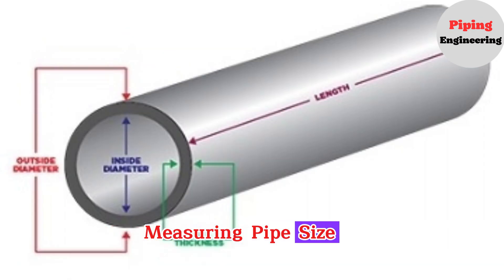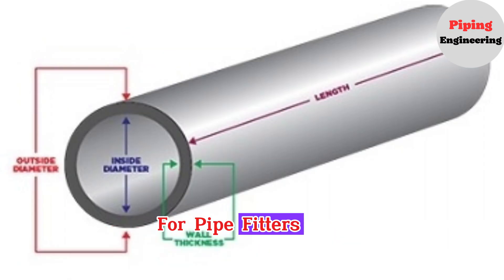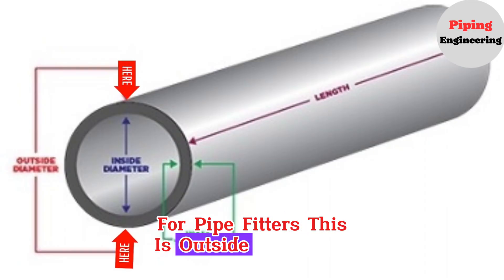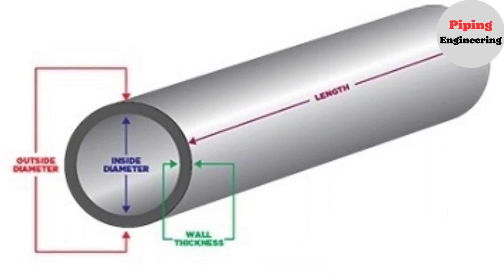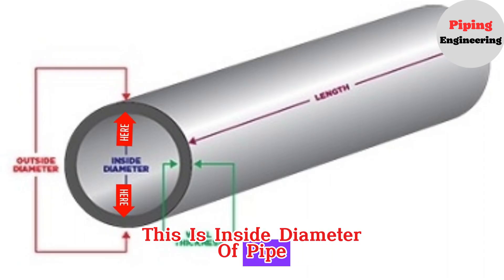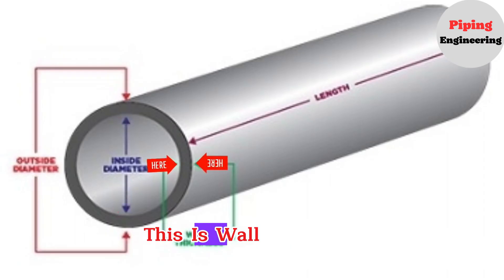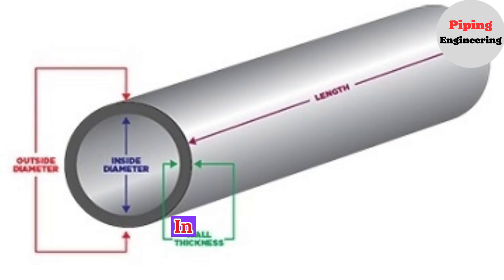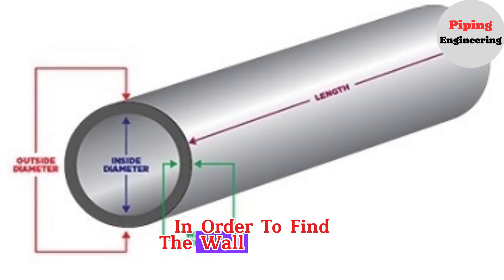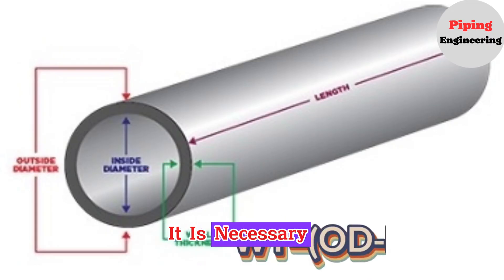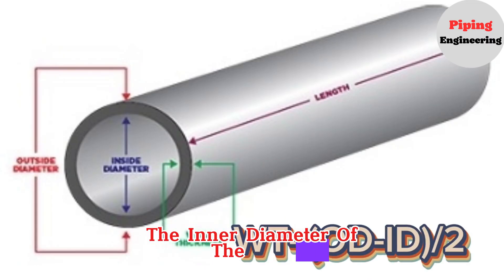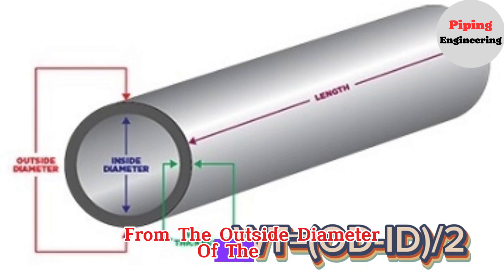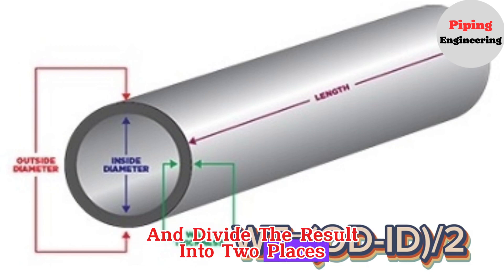Measuring pipe size is an important skill for pipe fitters. This is the outside diameter of the pipe. This is the inside diameter of the pipe. This is the wall thickness of the pipe. This is the length of the pipe. In order to find the wall thickness, take the inside diameter from the outside diameter and divide the result by two.